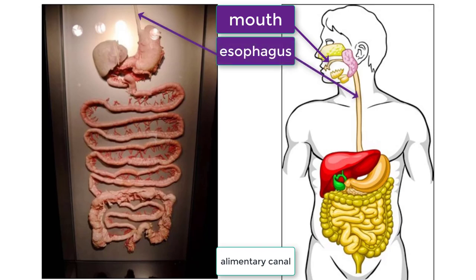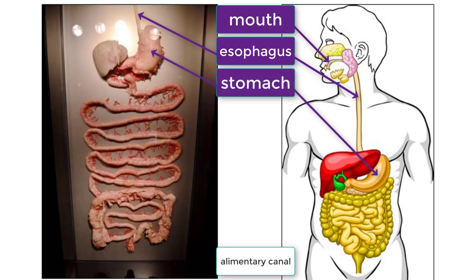Your esophagus muscles squeeze in a wave-like rhythm and push the food into your stomach. Once in your stomach, food begins to be chemically broken down into smaller components. It is very acidic and it is the location where proteins begin to be broken down.